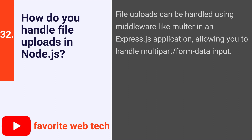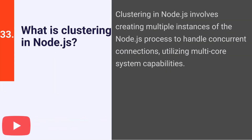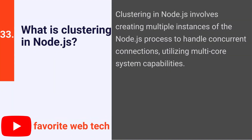How do you handle file uploads in Node.js? File uploads can be handled using middleware like Multer in an Express.js application, allowing you to handle multipart/form-data input. What is clustering in Node.js? Clustering in Node.js involves creating multiple instances of the Node.js process to handle concurrent connections, utilizing multi-core system capabilities.